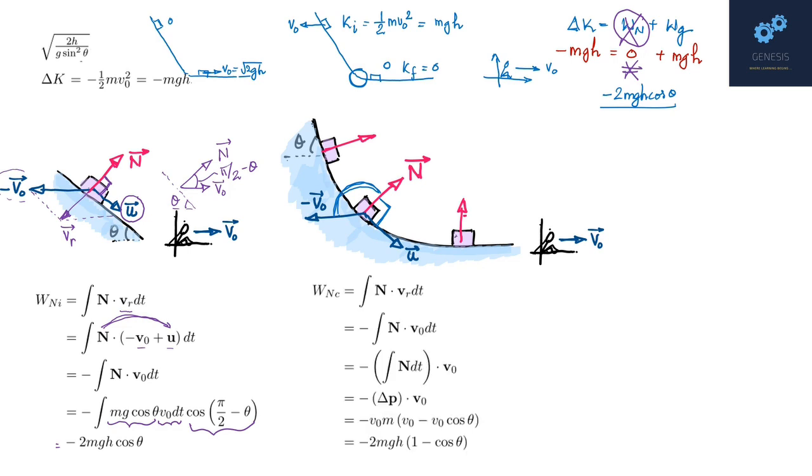So how do we calculate the work done? Pay close attention because this is slightly tricky. As usual, we start with N dot vr dt, where vr is the vector sum of minus v0 vector and u vector. As we saw, N dot u will become zero here also, and you are left with this. Now we do not know how much the height of this is, and therefore we cannot actually evaluate this integral. So we do a slight manipulation: put this dt with N, and since v0 vector is constant, the expression becomes the dot product of this impulse and v0 vector.